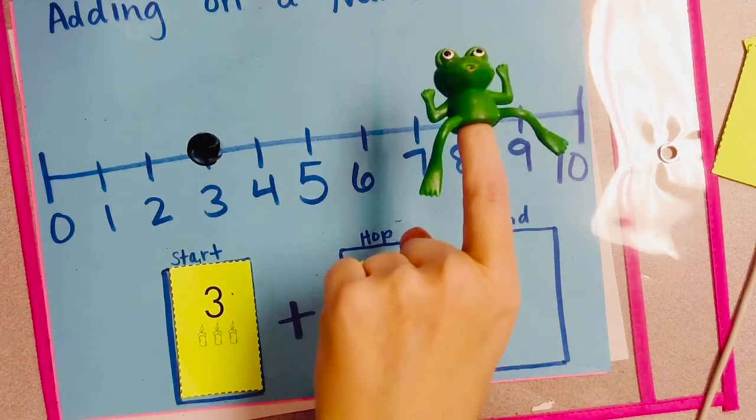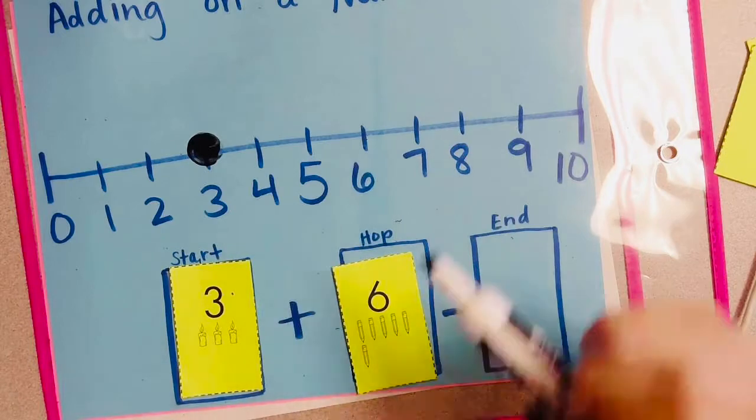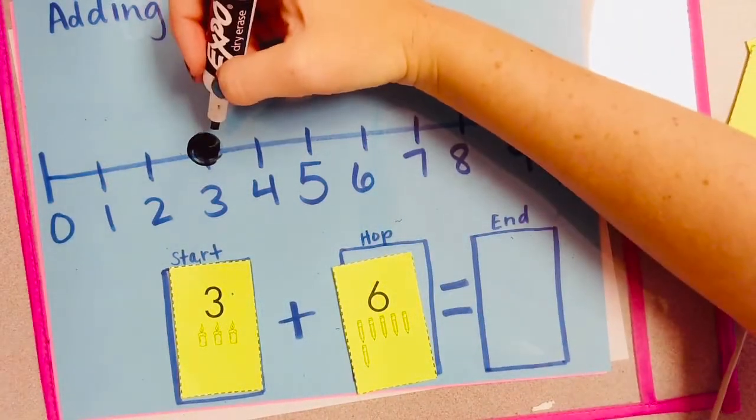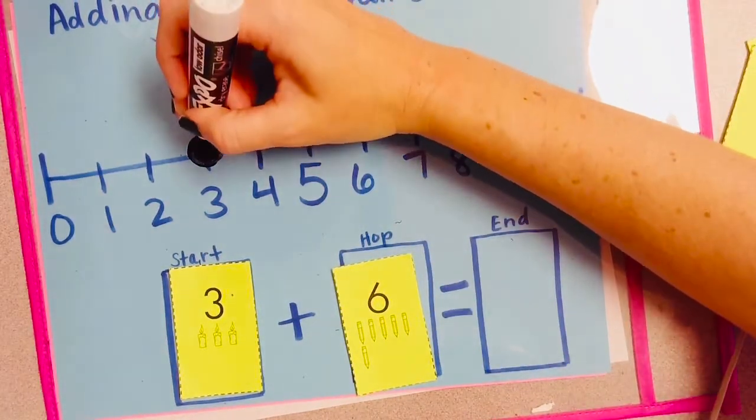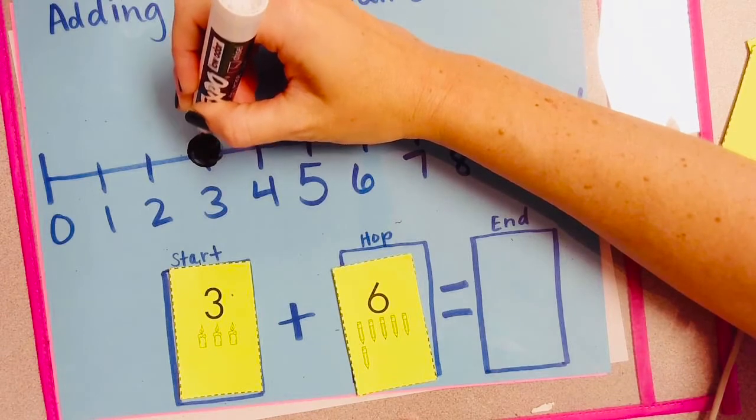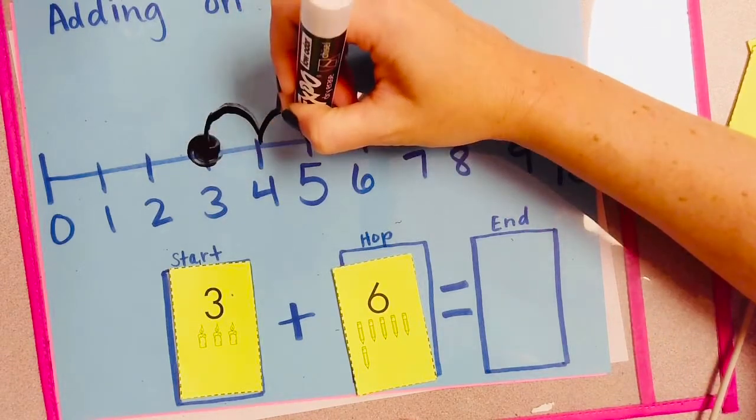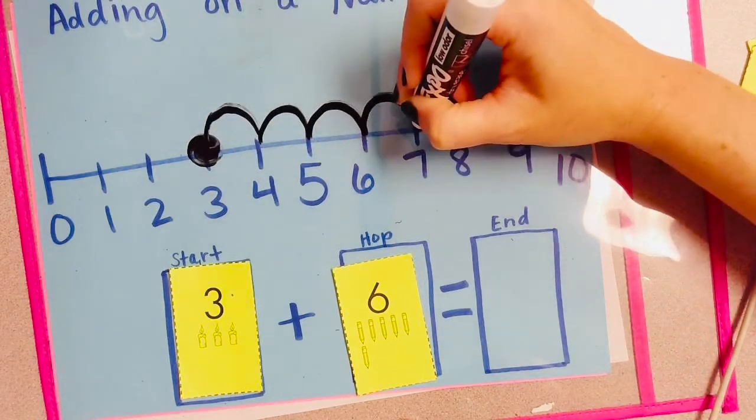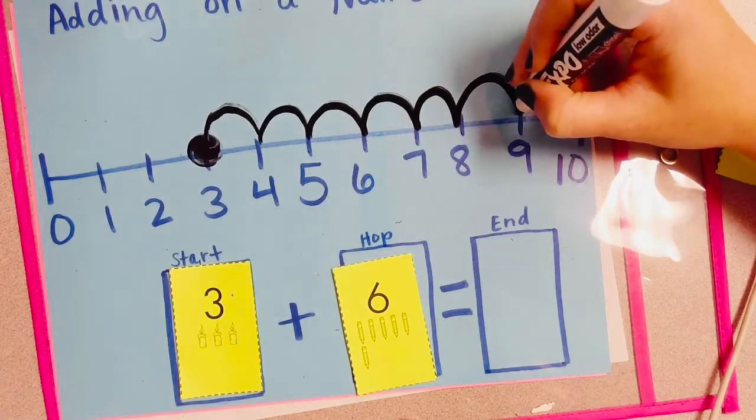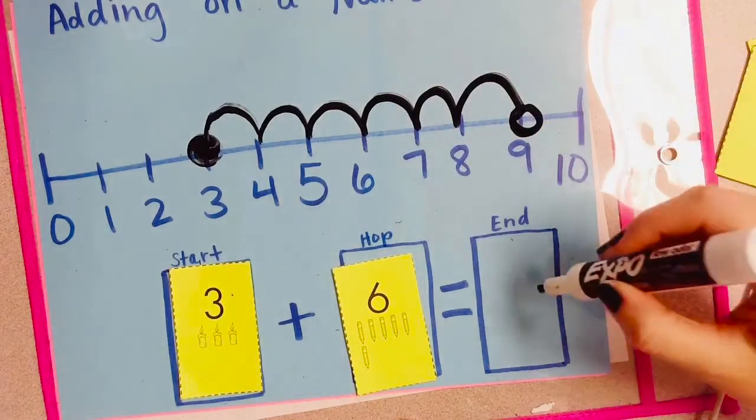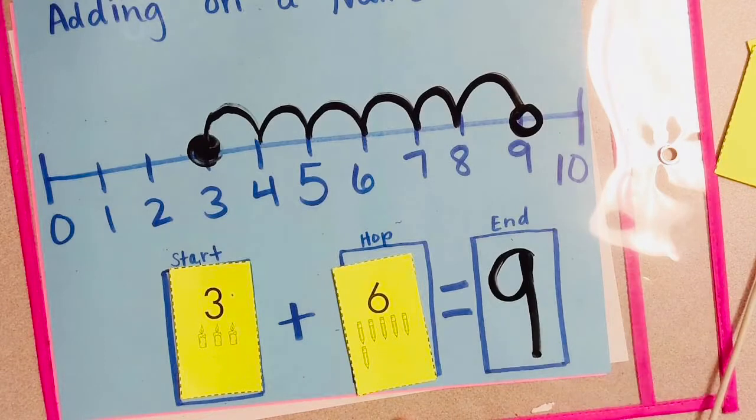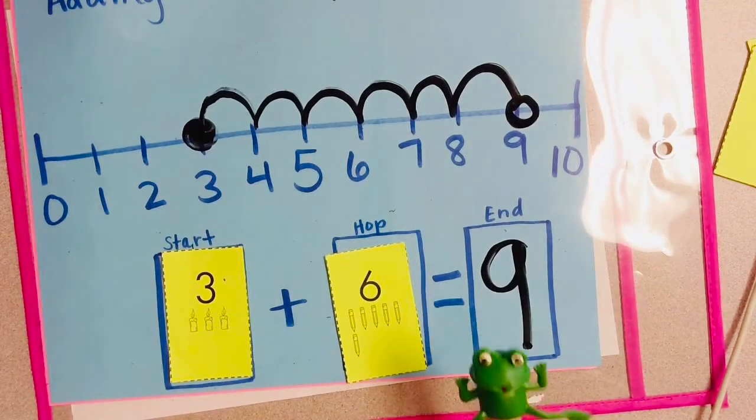And if you don't have a Mr. Frog puppet, you can just pretend and show the frog's path with your pencil. 1, 2, 3, 4, 5, 6. 3 plus 6 is 9.